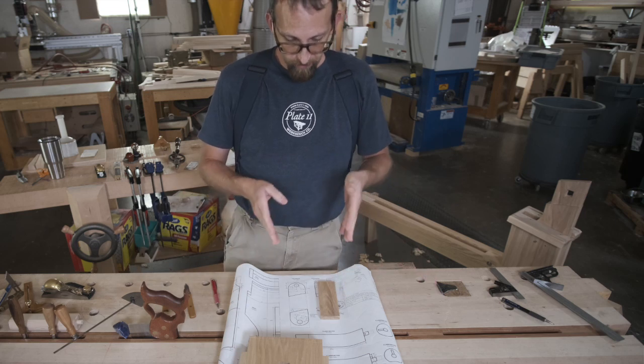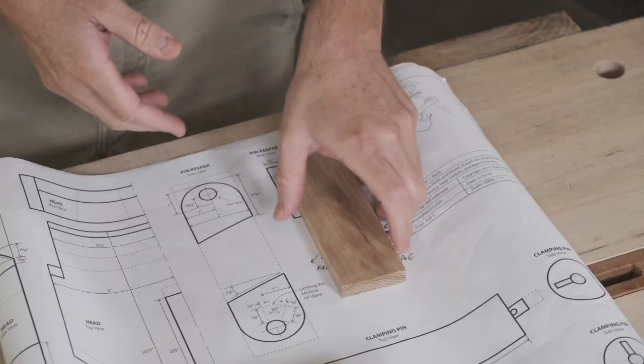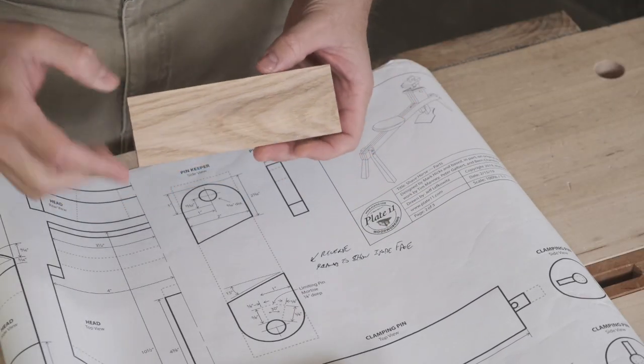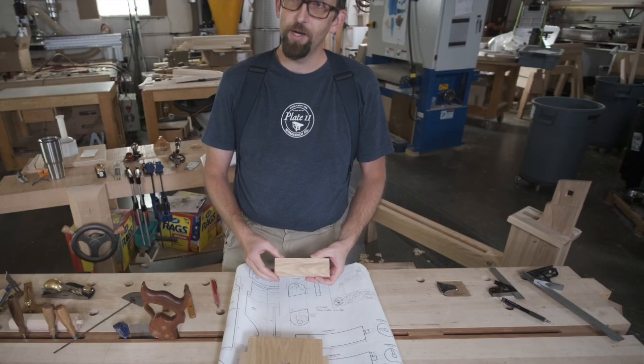Now that we've got the notches cut, we can lay out and fabricate the pinkeeper. The stock in the cut sheet is oversized so that you can make a keeper on each end of it and then cut it off after you've got them ready to go.